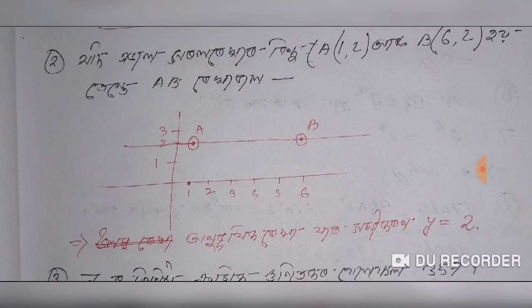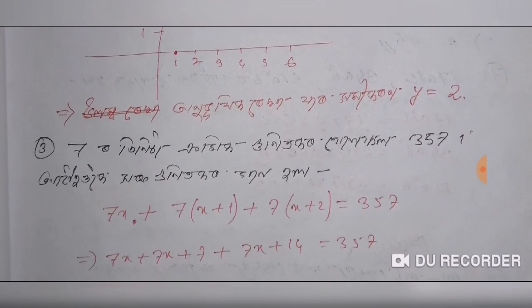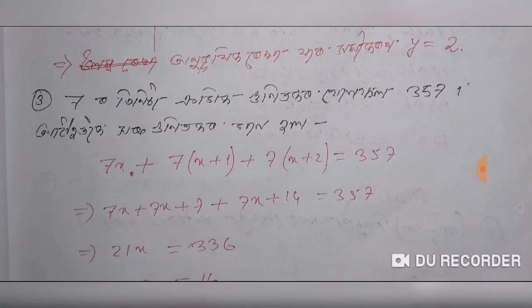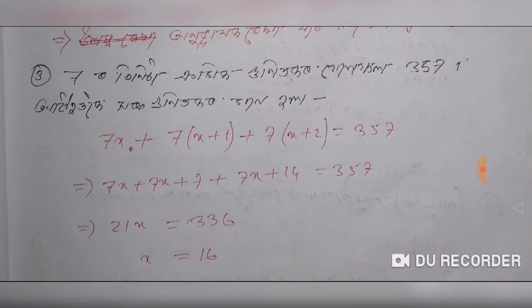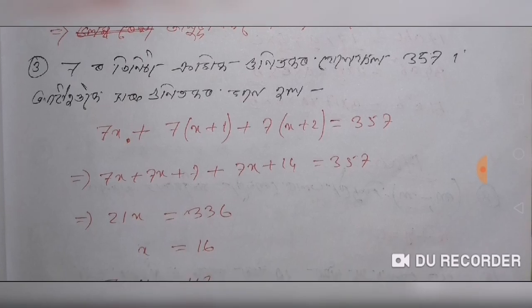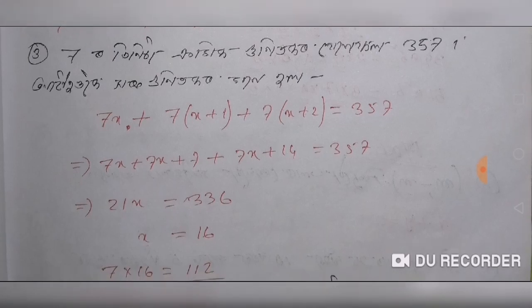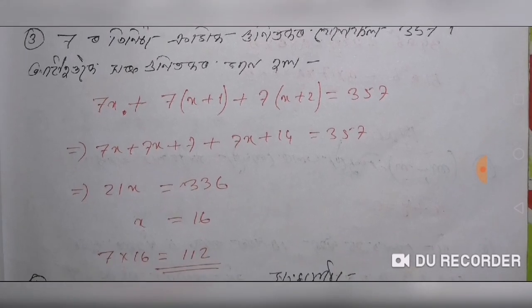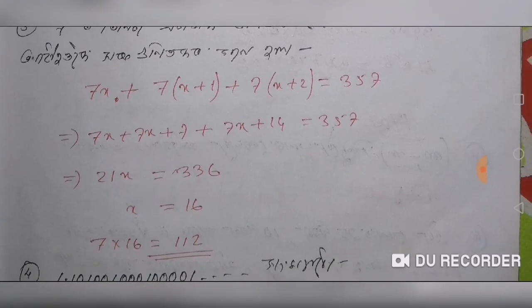So you will use y to the minus two and y equals two. So we have a question. First of all, I have to use the chromic and the x group of 3.57. We will use the chromic and the x group of 3.57. This is the x group of 3.57. So the x group of 3 and the x group of 3. 7x plus 7x plus 1 plus 7x plus 2 equal to 7x plus 7x plus 7x plus 14 equal to...